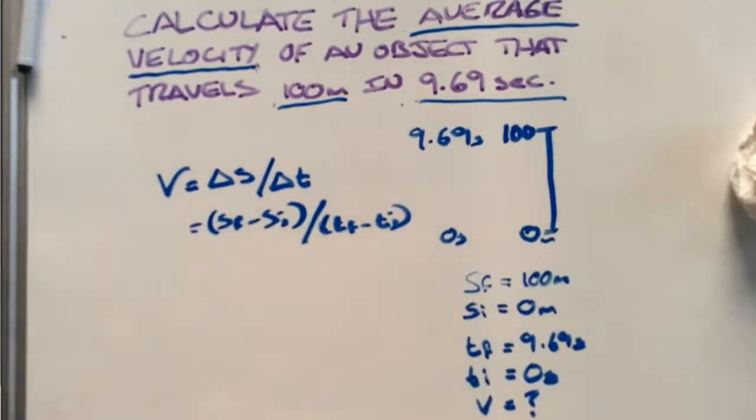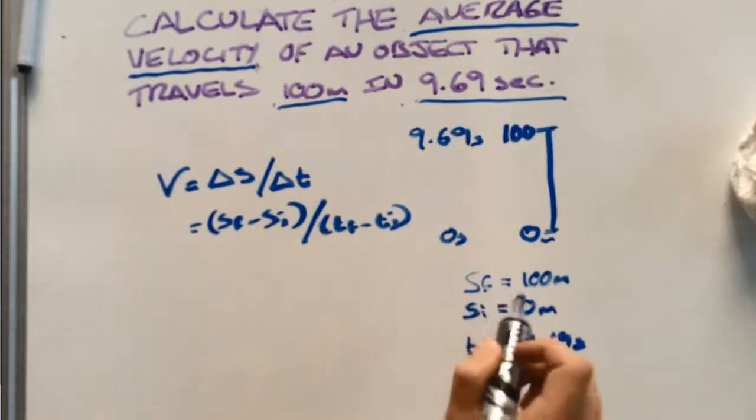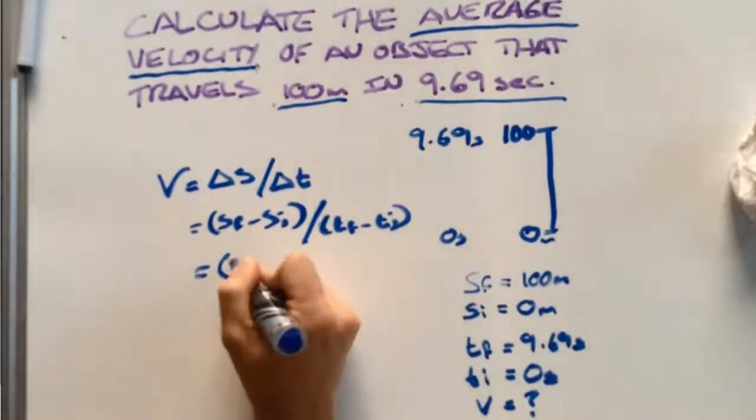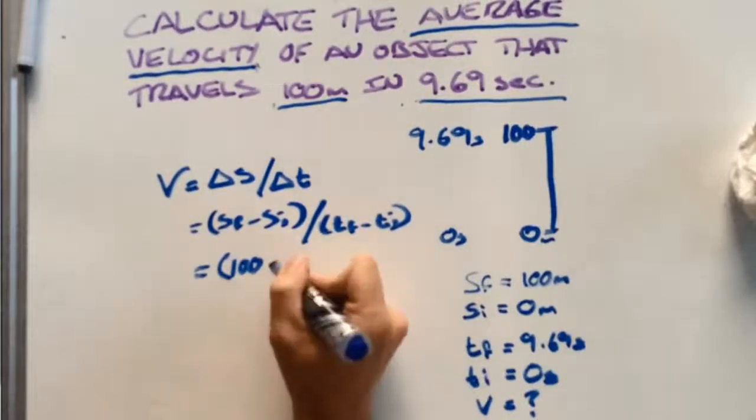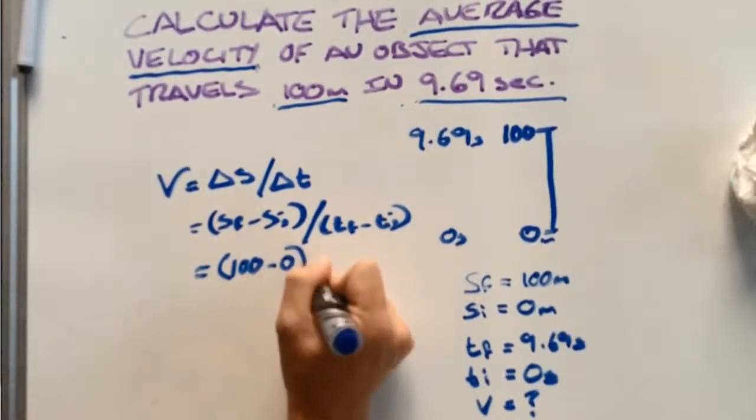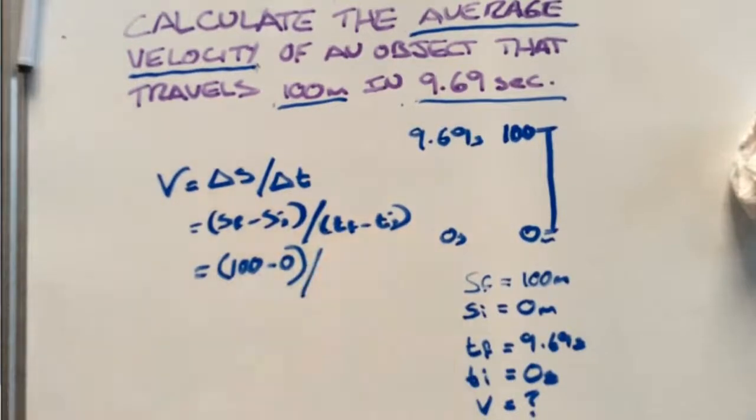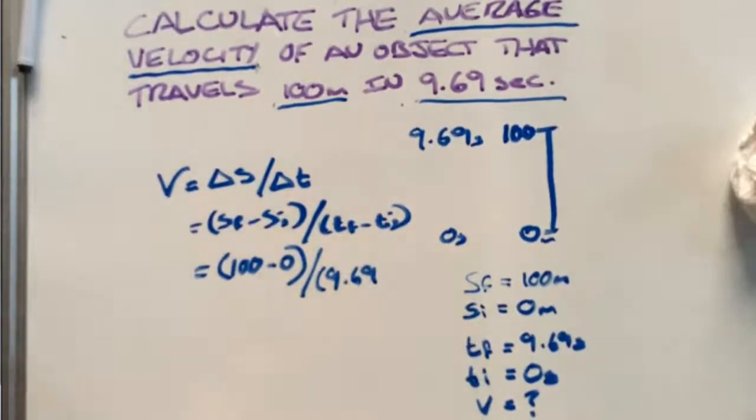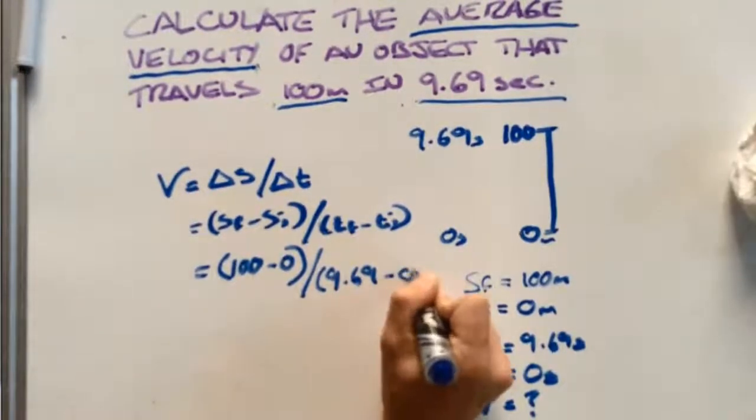So all we need to do now is take our information from the key and put it into our formula. We have 100 for our final minus zero for our initial, divided by 9.69 for our final minus zero for our initial.